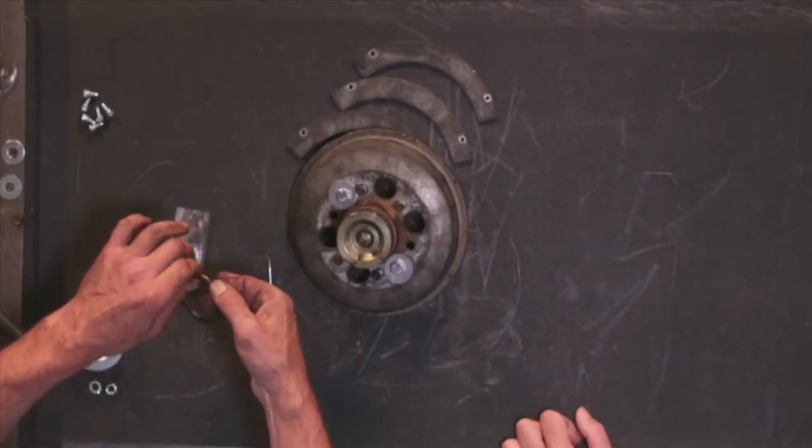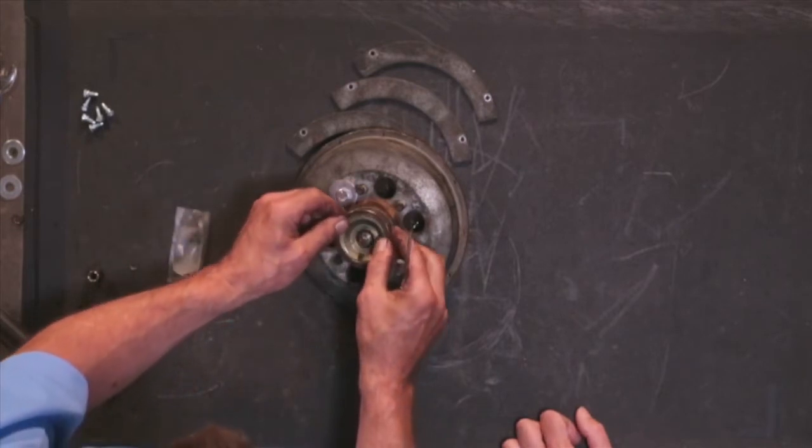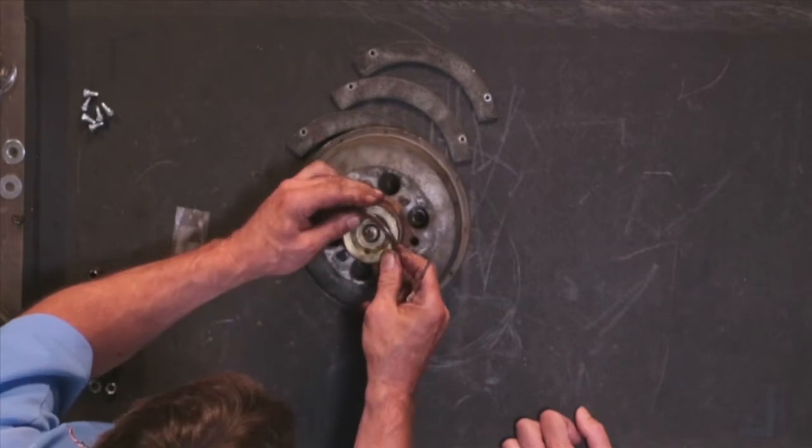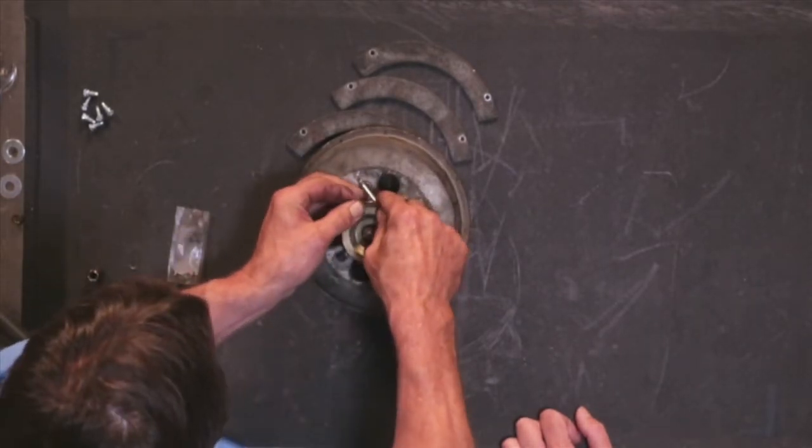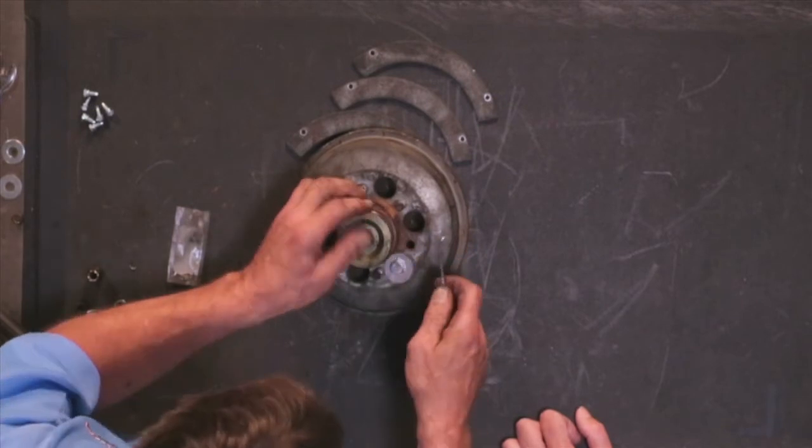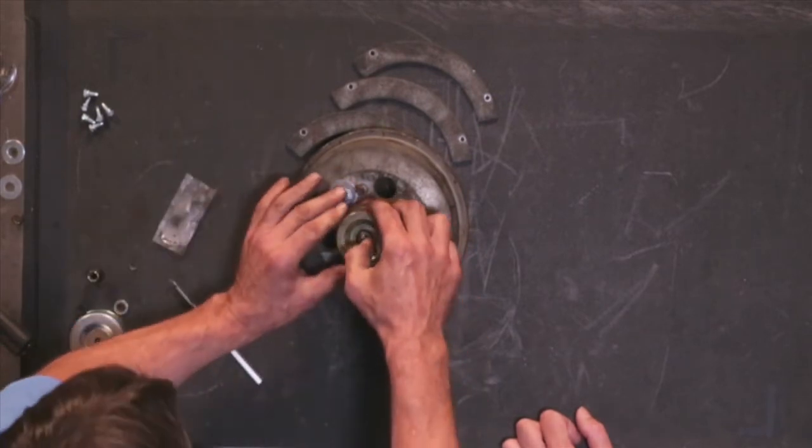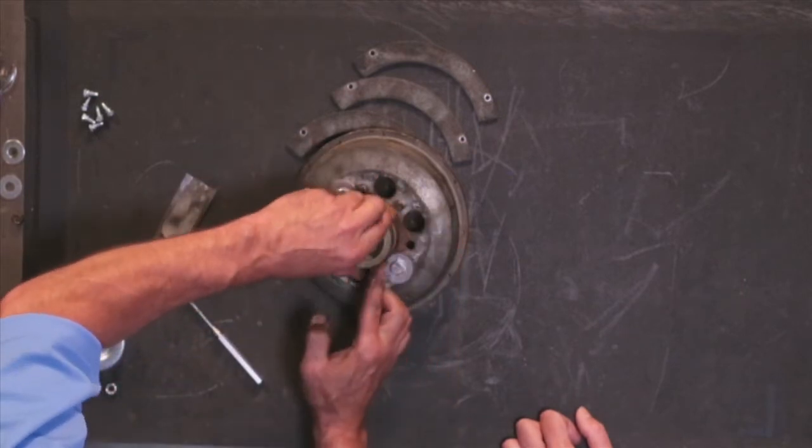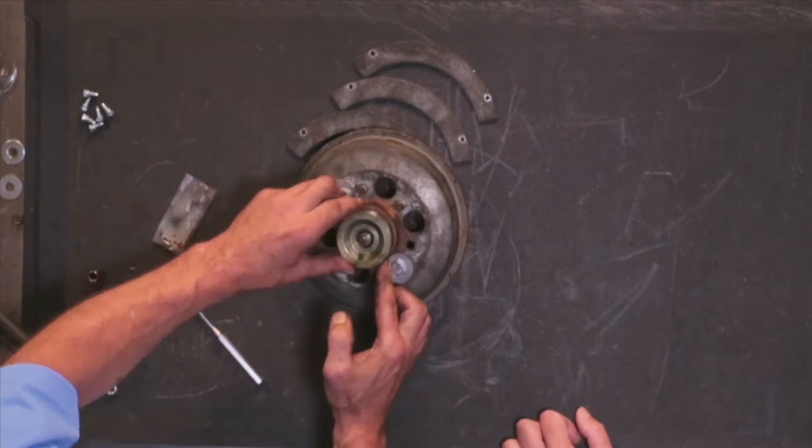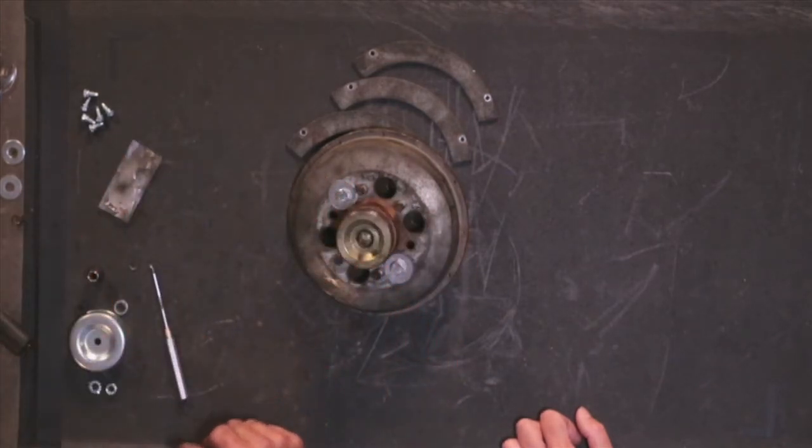Begin by applying the lubricant provided in the rebuild kit to the brown combo seal. Install the combo seal into the U-packing groove. Ensure that the U is facing up or toward the nose of the fan clutch. Also, ensure that it is properly seated in the groove. Take time to install extra lube to the exposed surfaces of the seal. The longer this seal lasts, the longer the fan clutch lasts.